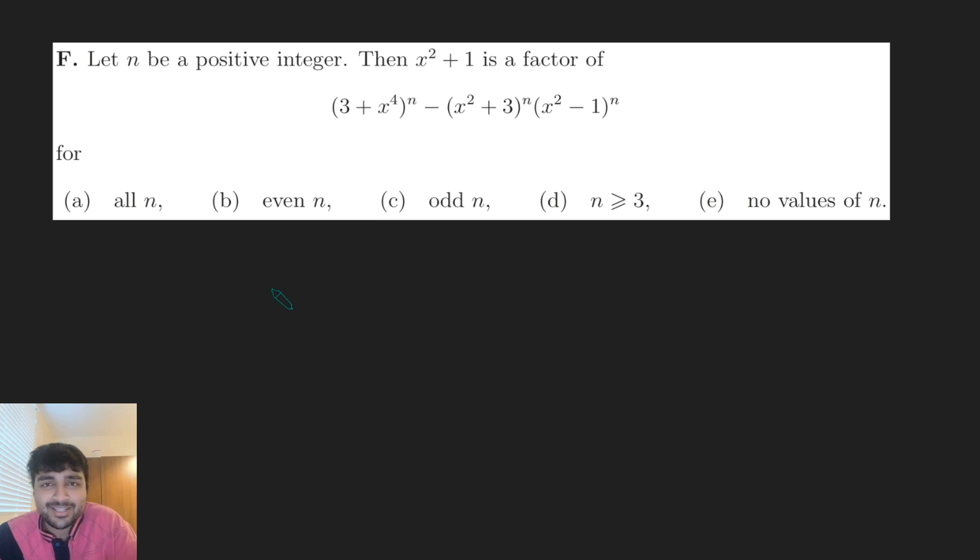Today I've got a problem from Oxford University's maths admissions test. Let n be a positive integer. Then x² + 1 is a factor of (3 + x⁴)ⁿ - (x² + 3)ⁿ(x² - 1)ⁿ for (a) all n, (b) even n, (c) odd n, (d) n ≥ 3, or (e) no values of n.